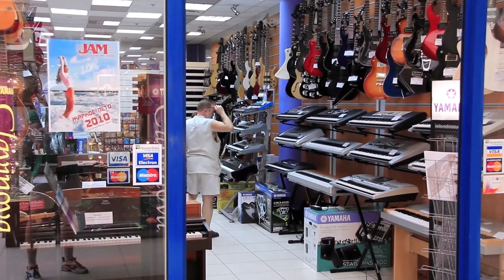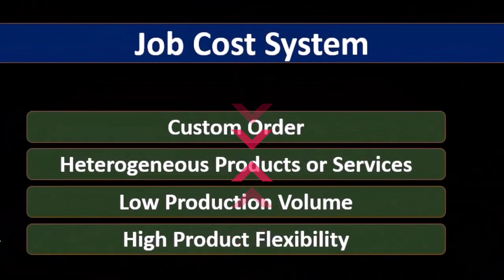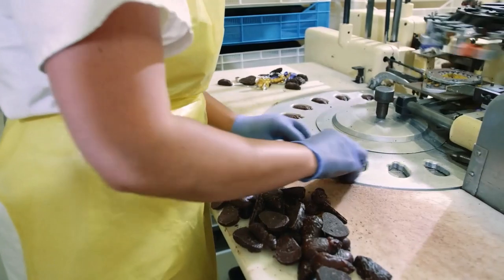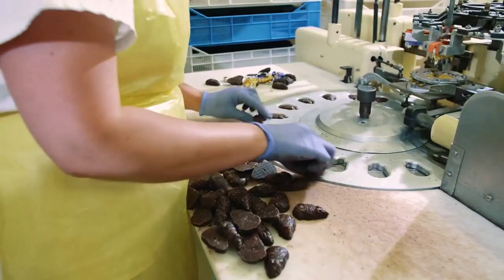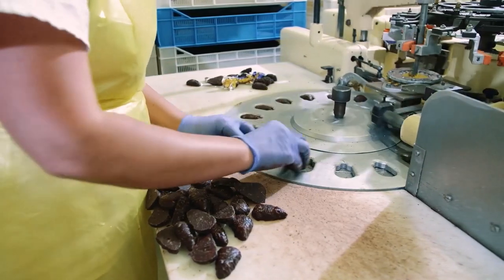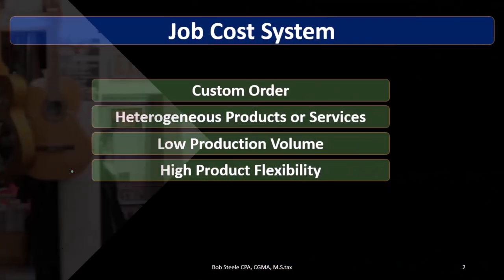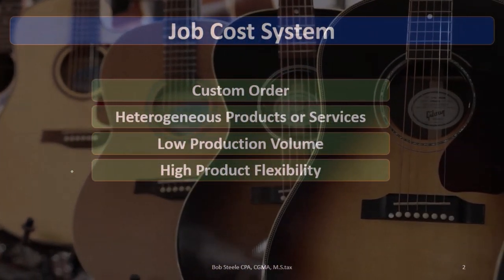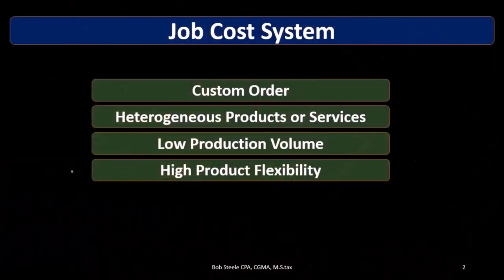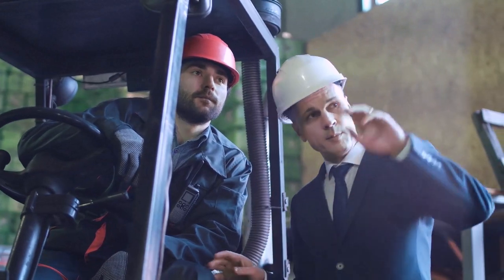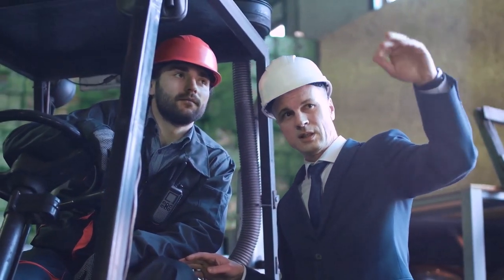We're also going to have high product flexibility, which again follows from the idea that products are custom. If something is going to be different in nature, that's going to vary. Even if we specialize only in guitars, the more customization we have within that product, the more we'll need a job cost system as opposed to a process cost system. In construction, we might do the same type of work all the time, but each job we deal with is typically going to be different just by the nature of the job.